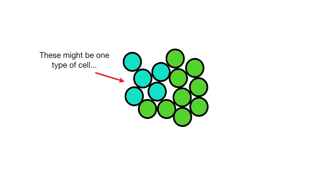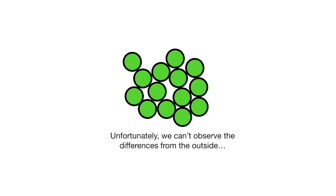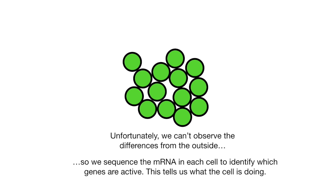These might be one type of cell or one type of person or car or city. These might be another type of cell and lastly, these might be a third type of cell. Unfortunately, we can't observe differences from the outside. So we sequence the messenger RNA in each cell to identify which genes are active. This tells us what the cell is doing.